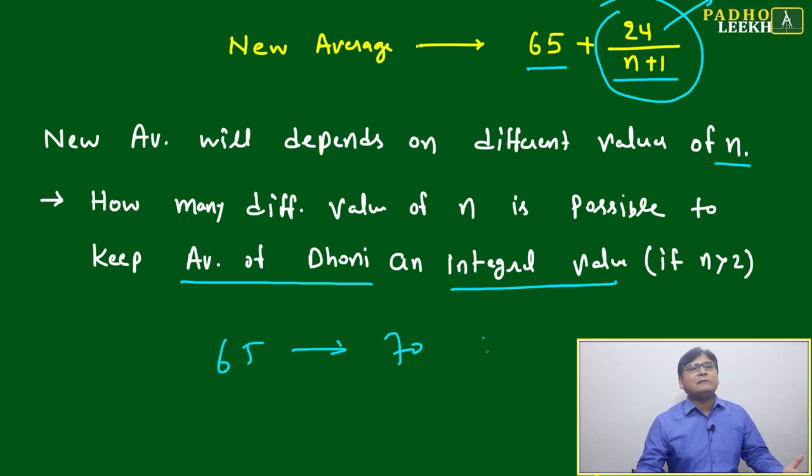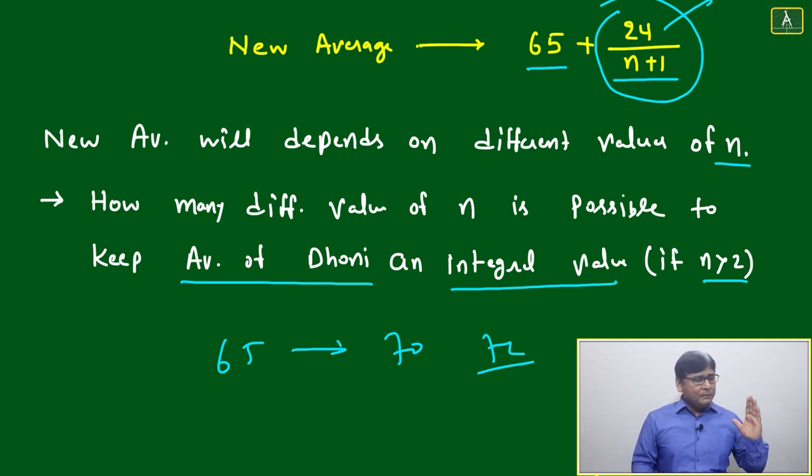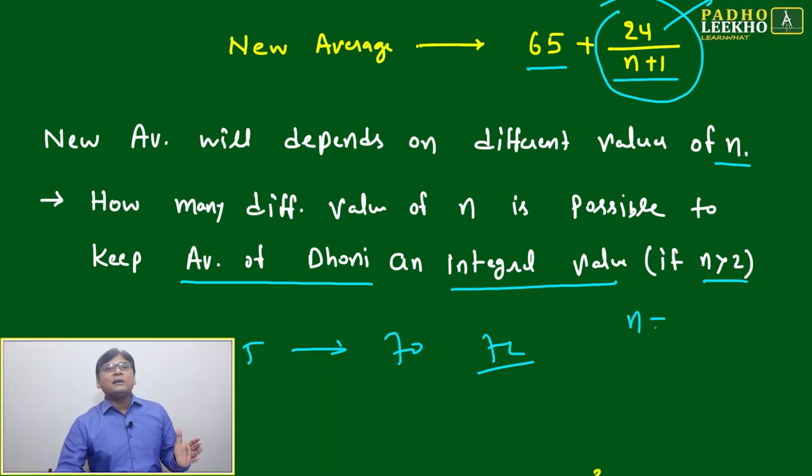Another condition: n should be greater than 2. Number of innings will always be an integer, not a fraction. You can't say Dhoni has played 4.5 innings or 10.5 innings. Either he will play 10 innings or 11 innings. Then n will be automatically an integer, and n cannot be 0, 1, or 2.